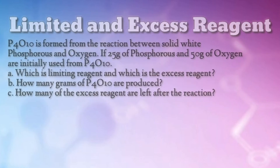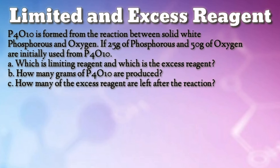Problem: Tetraphosphorus decoxide is formed from the reaction between solid white phosphorus and oxygen. If 25 grams of phosphorus and 50 grams of oxygen are initially used to form tetraphosphorus decoxide — (A) which is the limiting reagent and which is the excess reagent? (B) How many grams of tetraphosphorus decoxide are produced? (C) How much of the excess reagent is left after the reaction?